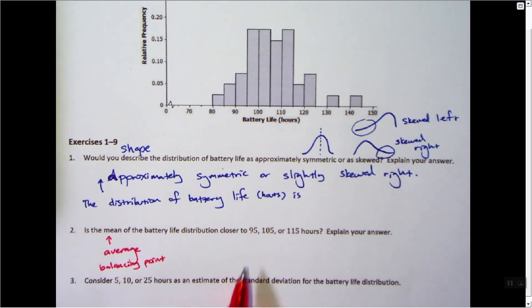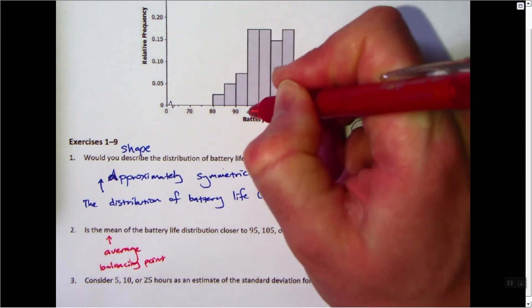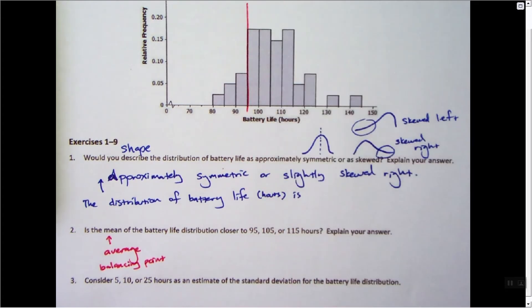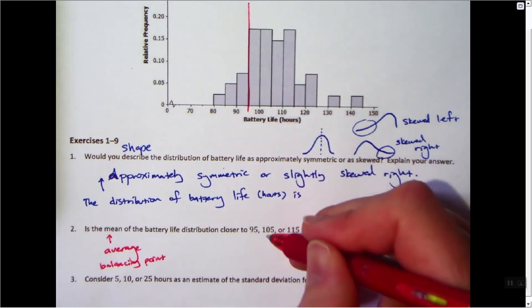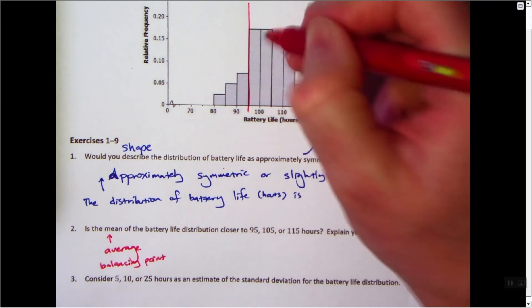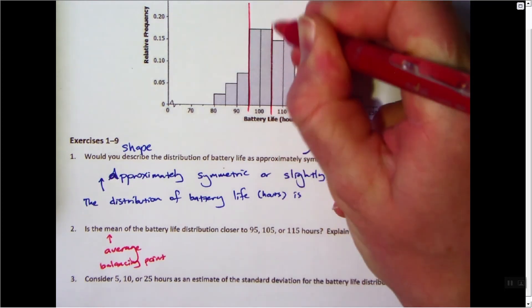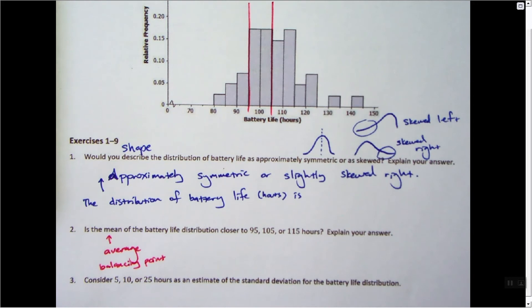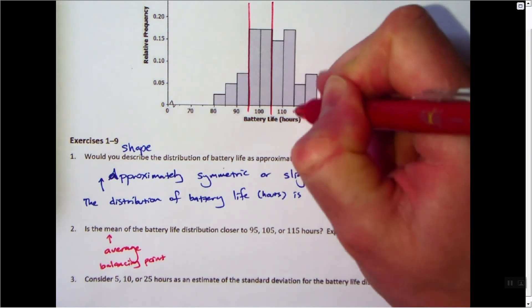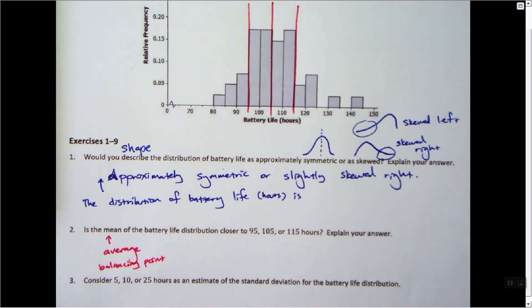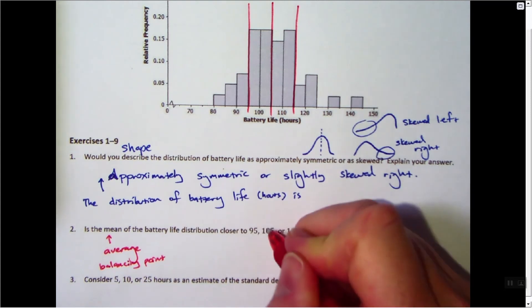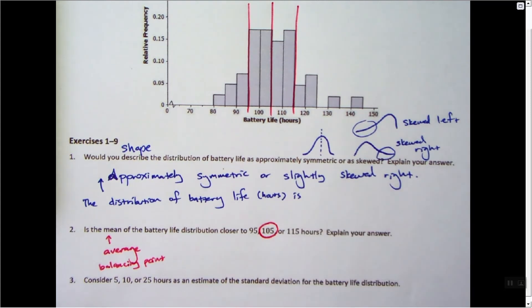And would it be 95? Would it be here? Does that look like it's kind of the average number or the balancing? And that looks like it's too far to the left. Does it look like it's 105 right here? I think it's the average, arithmetic average, adding them all up divided by the number of numbers. That looks more like it's in the center. Or 115 is right here, and that looks too far to the right. So I would say that 105 of these three, 105 looks like it's the arithmetic average of these three.